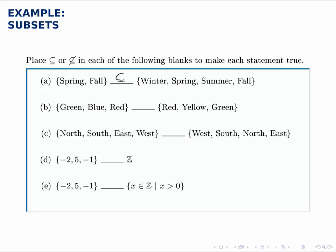In part B, however, notice that blue doesn't show up in the set on the right, which means that the elements in the left set are not chosen completely from those in the right set, which means it's not a subset. So we can write this, the same symbol with a slash through it.